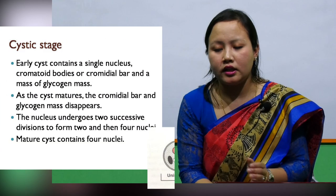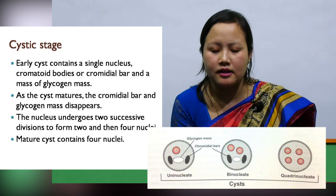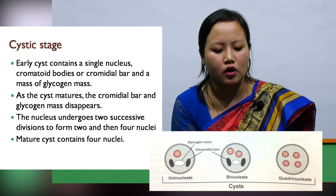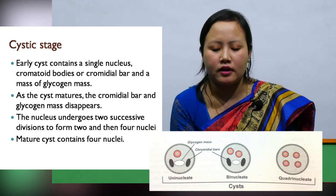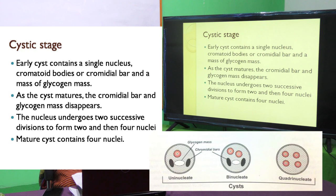The cystic stage has a round or spherical shape. In the early stage, the cyst contains chromidial bodies, also called chromidial bars or chromatoid bodies, along with a glycogen mass. The chromatoid bodies are RNA bodies mixed with RNA-binding proteins. As the cyst matures, the chromidial bodies and glycogen mass disappear, and the nucleus undergoes two successive divisions. The mature cyst is quadrinucleated.